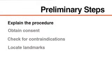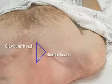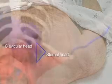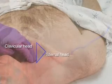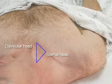After the procedure has been explained and consent obtained, review the records to confirm that there are no contraindications and examine the patient, concentrating on the regional landmarks. The internal jugular vein can be found at the apex of the triangle formed by the sternal and clavicular heads of the sternocleidomastoid muscle, just lateral to the carotid artery.